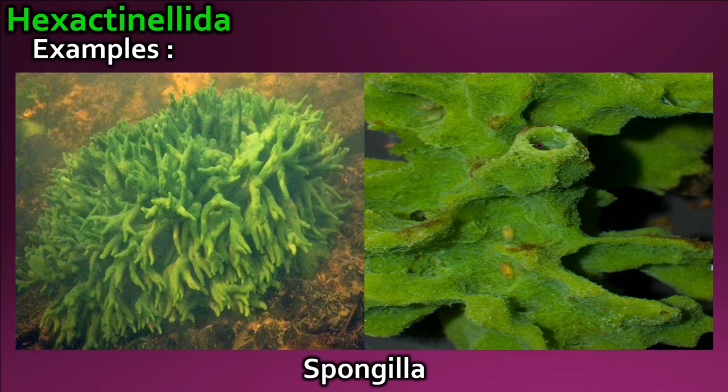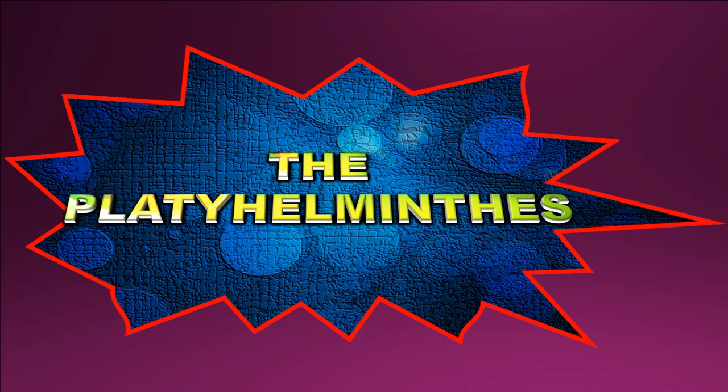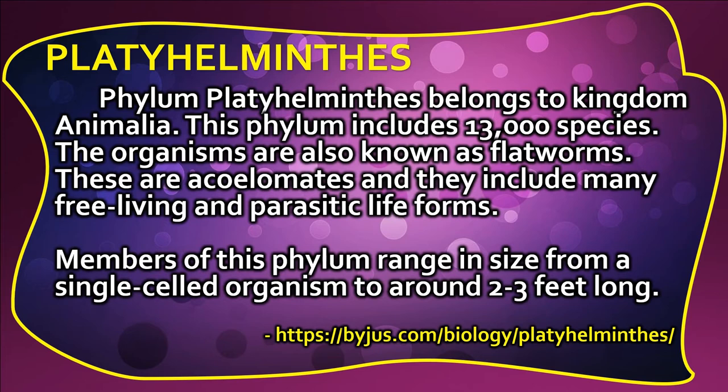The Platyhelminthes. Phylum Platyhelminthes belongs to kingdom Animalia and includes 13,000 species. The organisms are also known as flatworms. These are acoelomates and they include many free-living and parasitic life forms. Members of this phylum range in size from a single-celled organism to around 2 to 3 feet long.